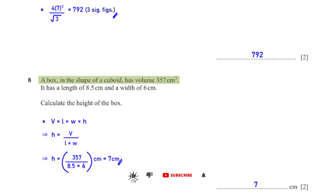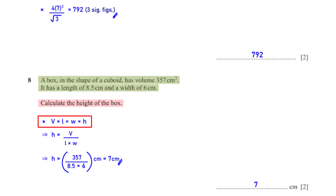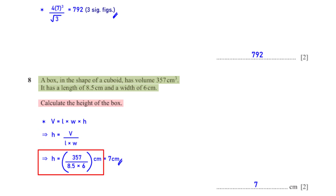A box in the shape of a cuboid has volume 357 centimeters cubed. It has a length of 8.5 centimeters and a width of 6 centimeters. Calculate the height of the box. Using the formula for the volume of a cuboid, we make h the subject. With V = 357, L = 8.5, and W = 6, this gives us a height of 7 centimeters.